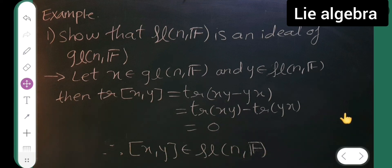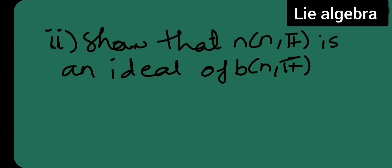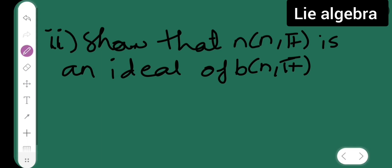For the next example, I want you all to show that n(n, F) is an ideal of b(n, F). If you are not able to solve this problem, you can comment below and I can give you the solution. Thanks for watching. The next lecture will be on the center of a Lie algebra, and I will also prove exercise problem 1.5.